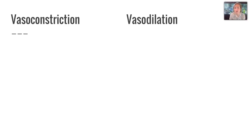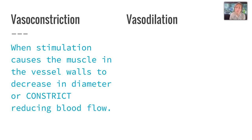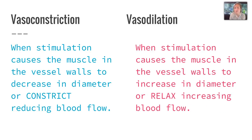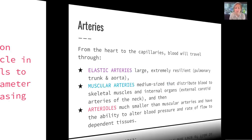Due to stimulation, two things can happen within the blood vessel walls. You can have vasoconstriction, which causes the muscles in the vessel walls to decrease in diameter, constricting or reducing blood flow. The opposite is vasodilation, when a stimulus causes the vessel walls to increase in diameter or relax, which increases blood flow. This happens in response to different situations that arise within the cardiovascular system.